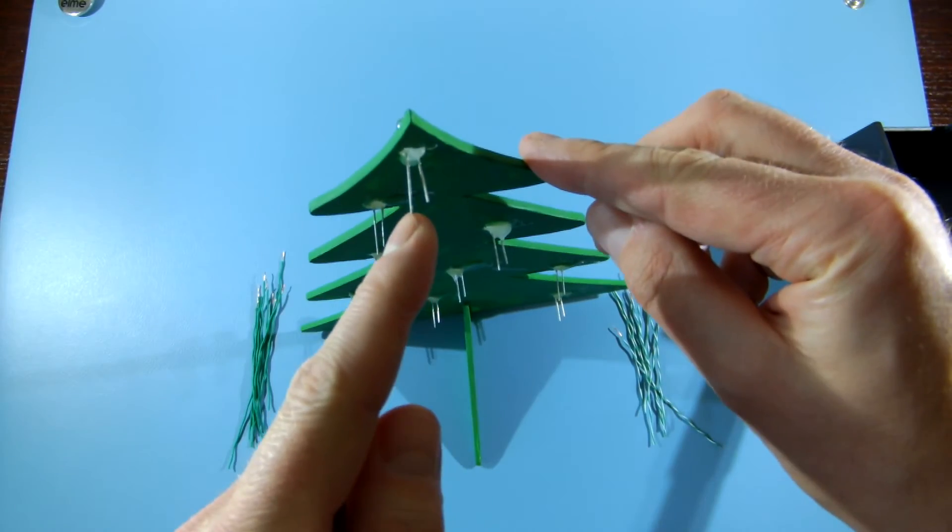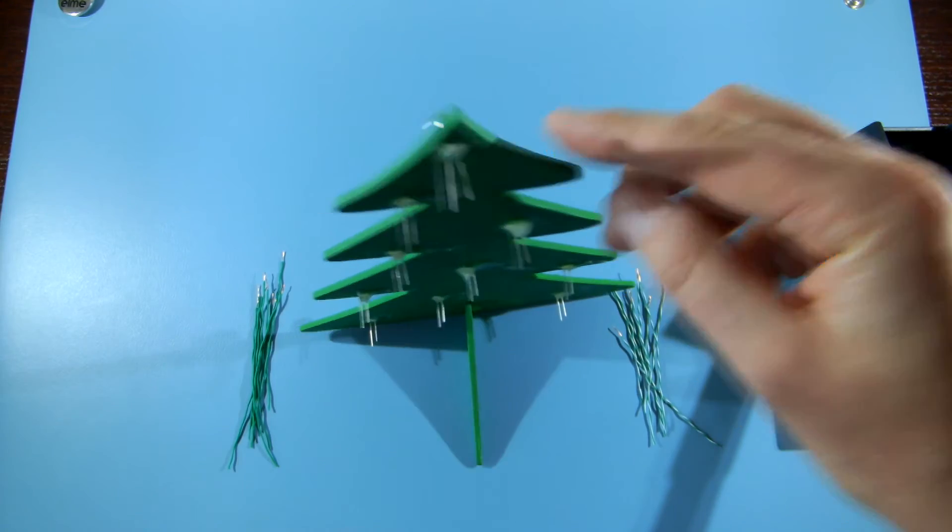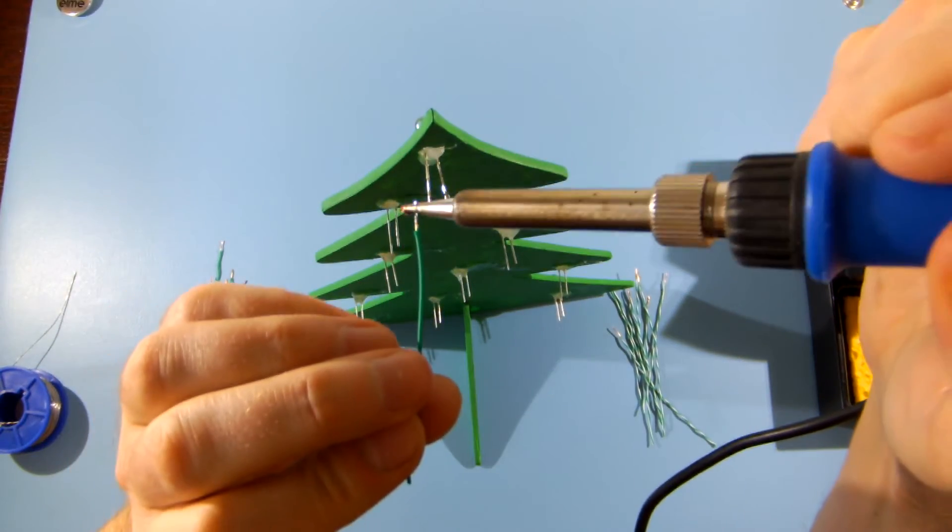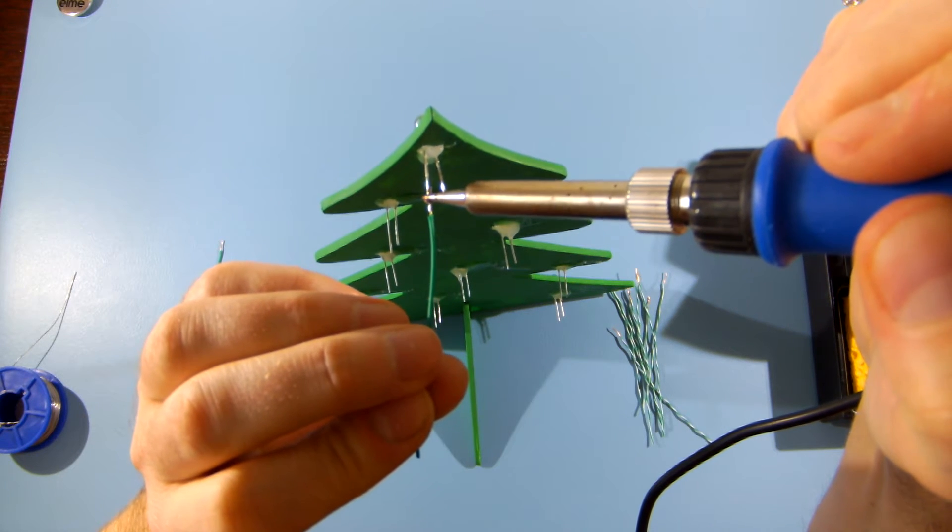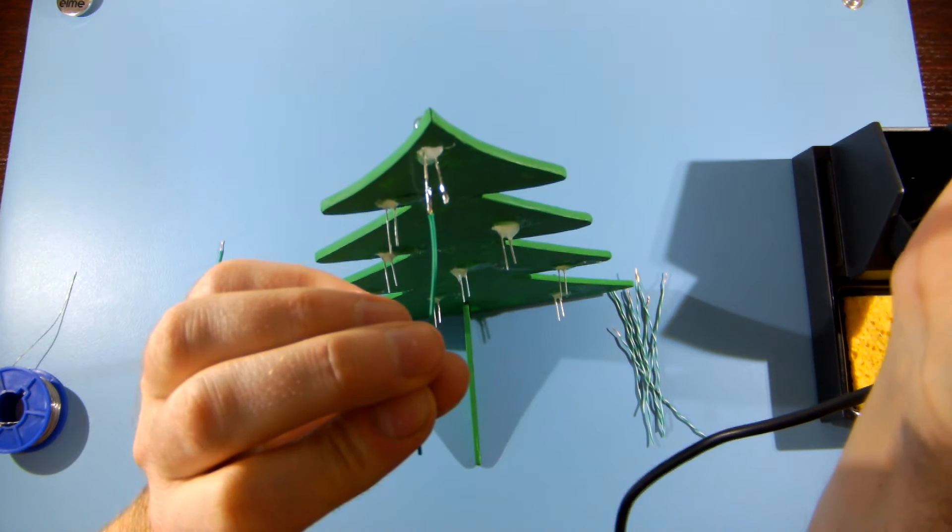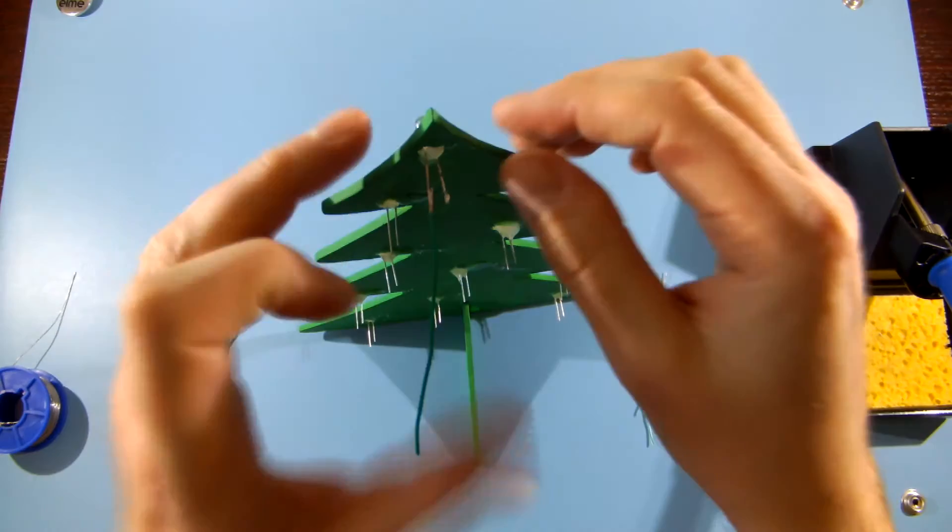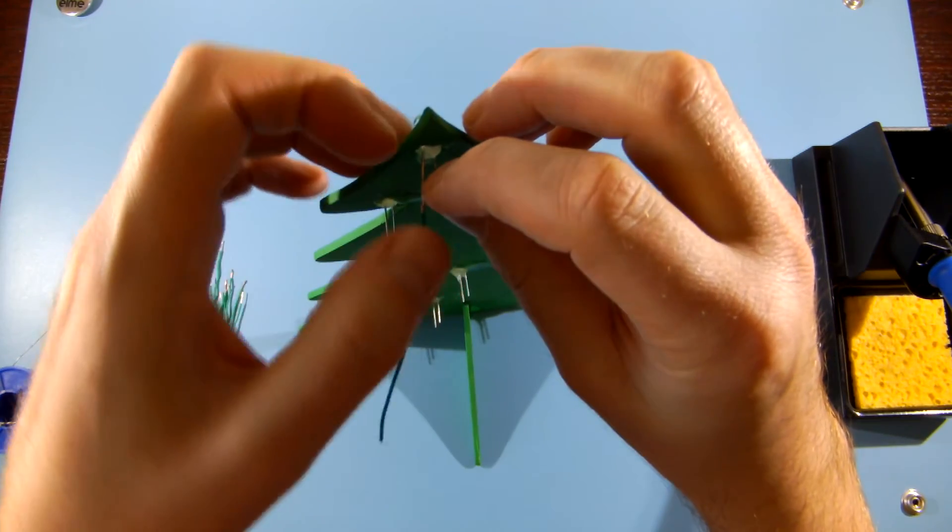The longer lead is positive and the shorter one is ground. We want to wire the LEDs in parallel by connecting all positive leads using the green wires and all ground leads with the white green wires. Solder all the green wires and bend the leads as you need to avoid short circuits.